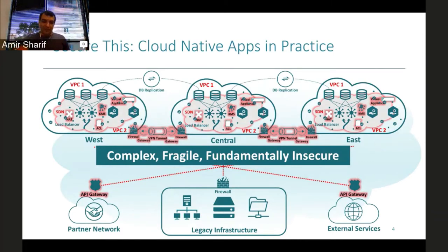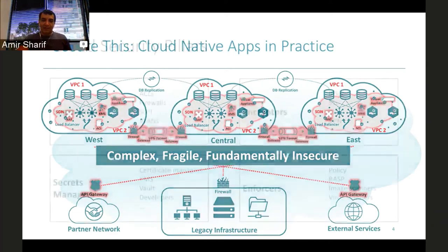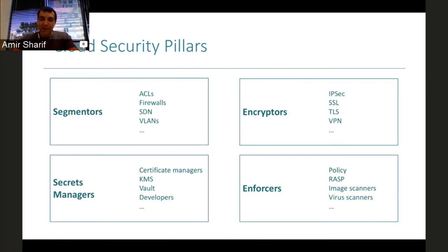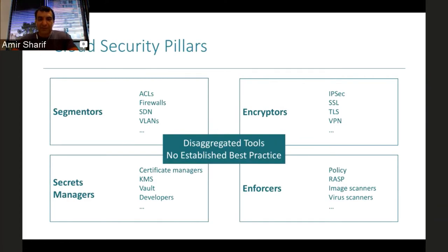Why do we have such complexity inside the cloud? Basically, we're trying to solve four different types of problems: segmentation, encryption, enforcement, and secrets management. When you look at any particular solution, they typically address two or maybe three of these. What you have is a set of disaggregated tools that run all over the place, with no established best practices. It's up to the customer to cobble stuff together.